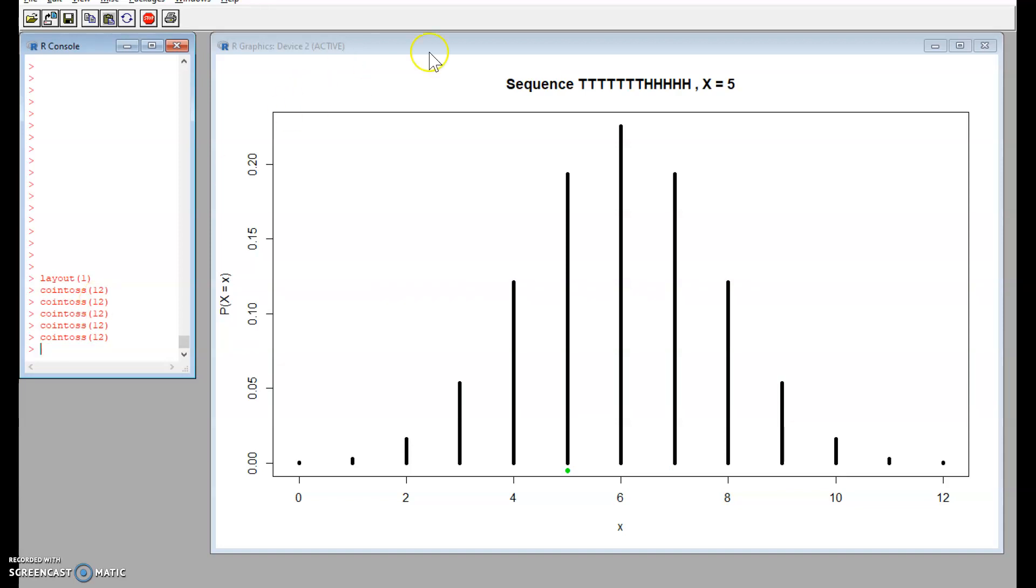I keep going, that's an unusual one isn't it? 7 tails followed by 5 heads. Again we might be surprised to see that pattern. X equals 6. Again we've got these runs which we might be surprised by but the sum completely unsurprising.